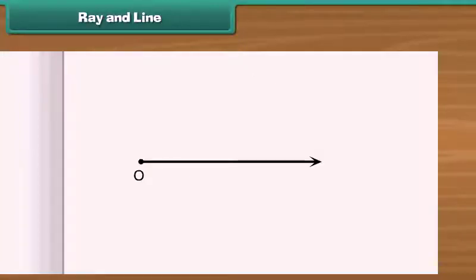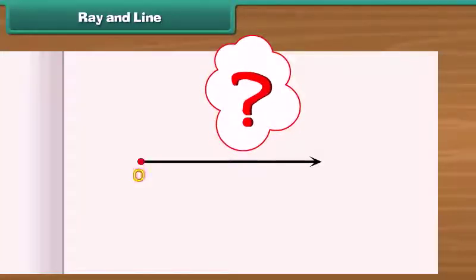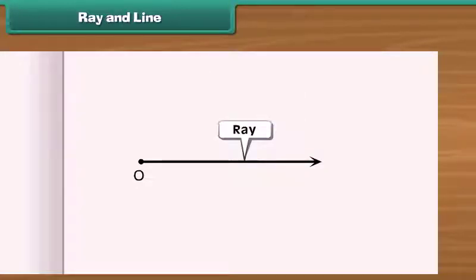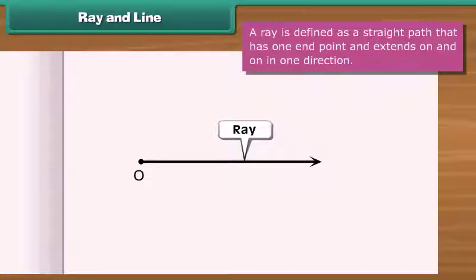What will you call this? It has one endpoint. On its other end, there is an arrowhead. This implies that it can be extended in the direction of the arrowhead. This is called a ray. We define a ray as a straight path that has one endpoint and extends on and on in one direction.